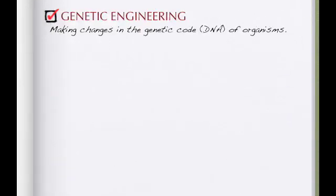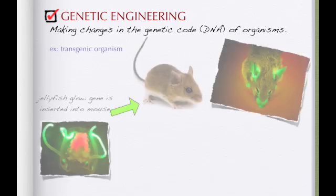And last, genetic engineering. This is where you actually manipulate the genetic code — the DNA itself. If you change the letters around, the bases, you can actually change the amino acids. That means you change the protein, which means you change the trait.